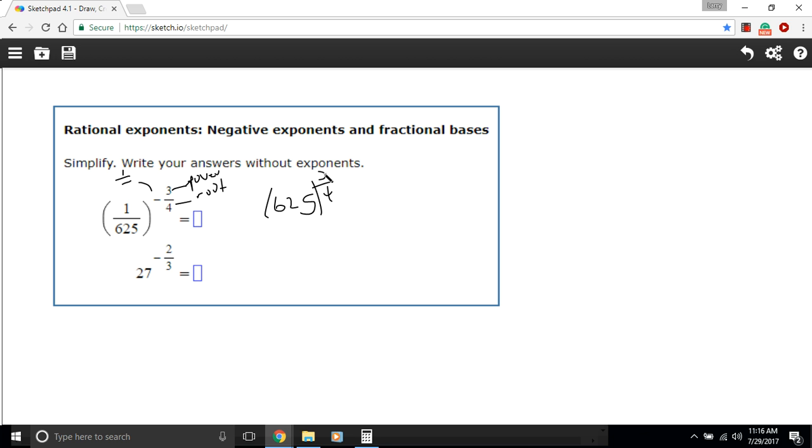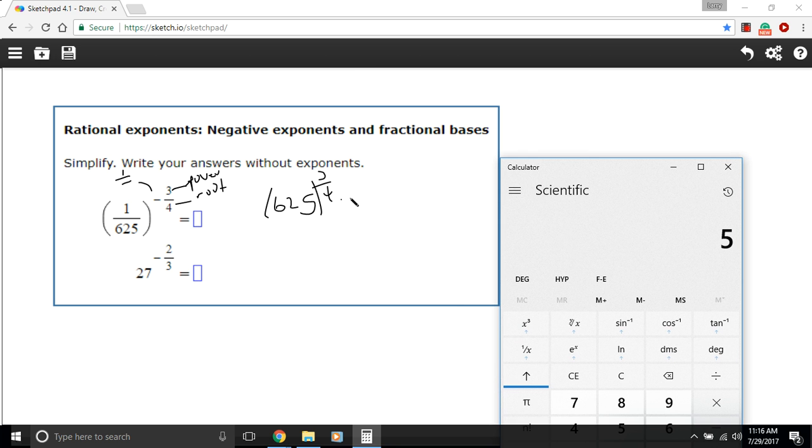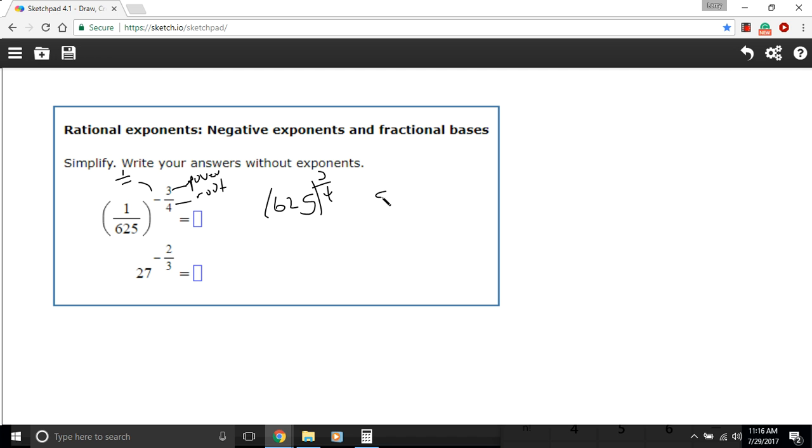Now I have my power and my root here. Doesn't matter which one you do first. I think I'm going to do the fourth root of 625 because I think that's five, but I can always double check with a calculator. So I've got 625, I can use the y root of x key and press that and take the fourth root, and yeah that is five.